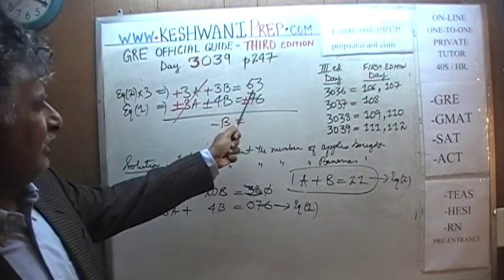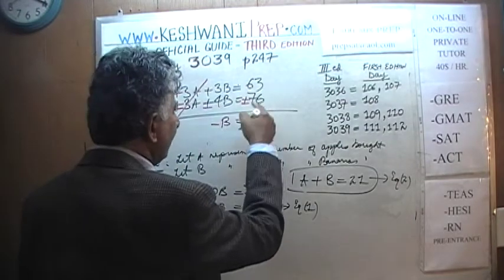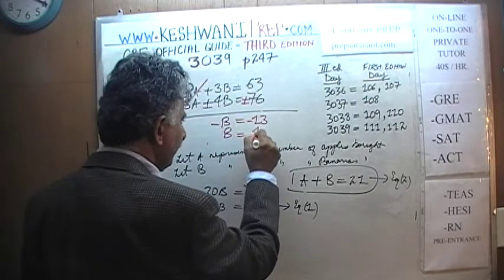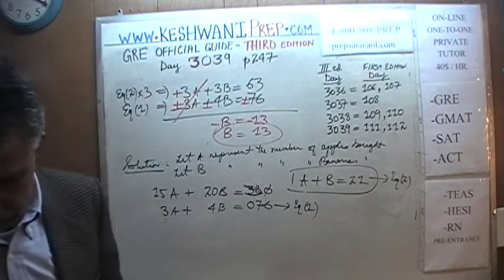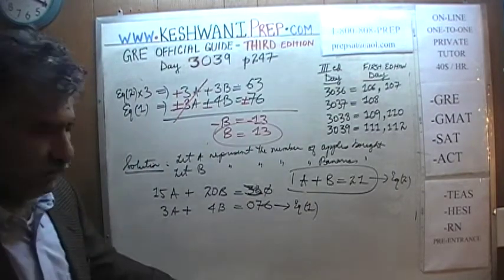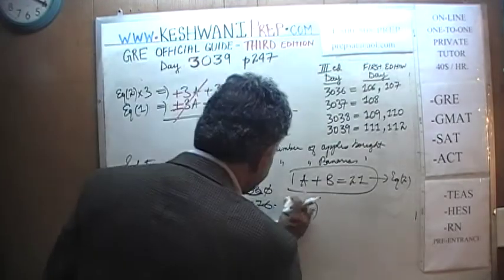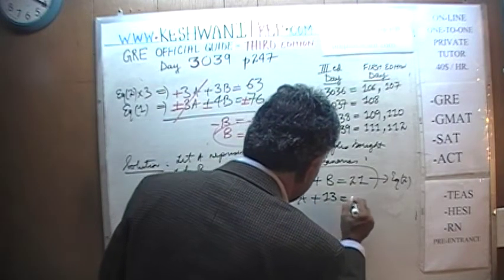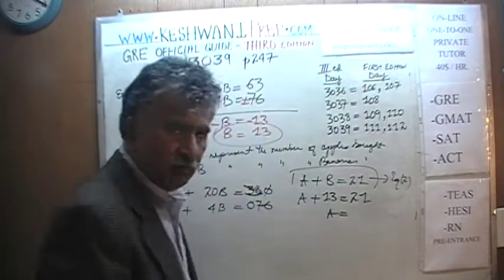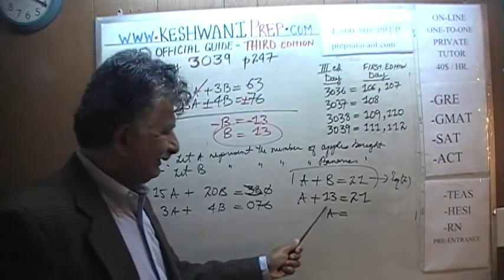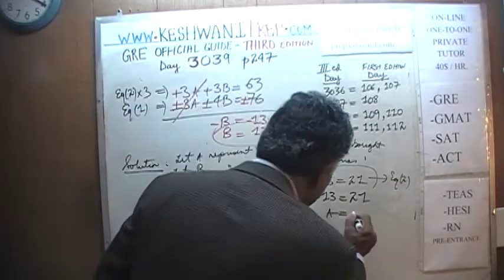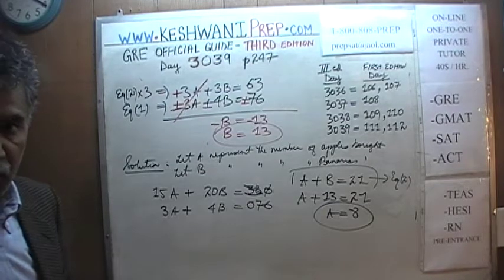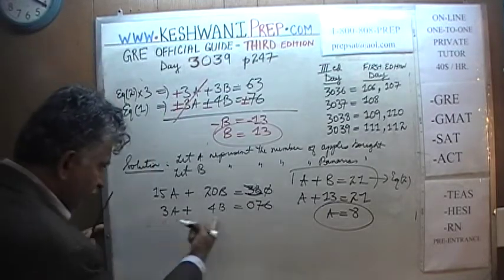We must have bought 13 bananas. If we bought 13 bananas, we can find the apples: A plus 13 equals 21, which means A equals 21 minus 13. 21 minus 11 would have been 10, so 21 minus 13 is 8. We bought 8 apples. If you want to quickly verify, we can check using equation 1.